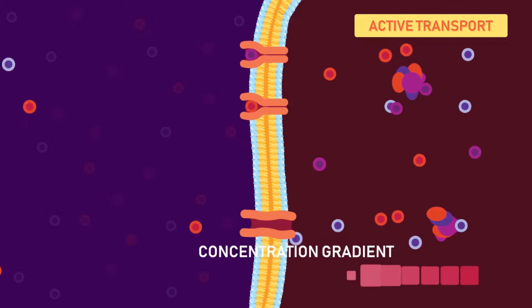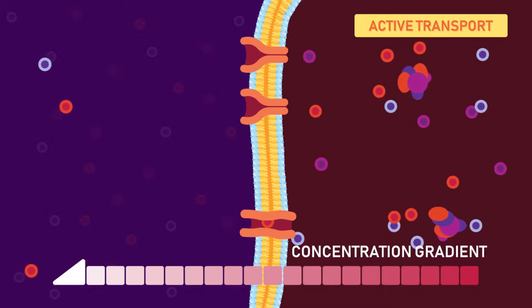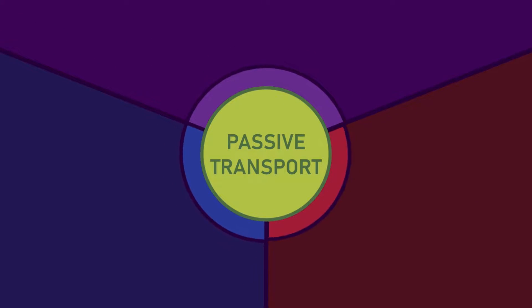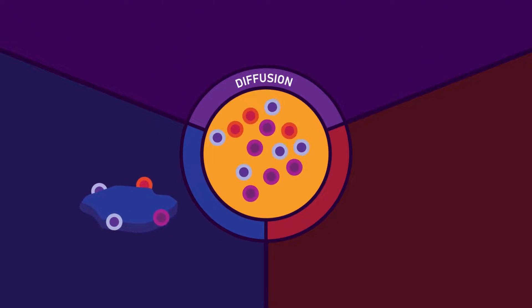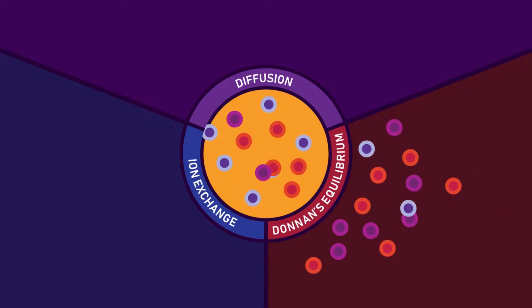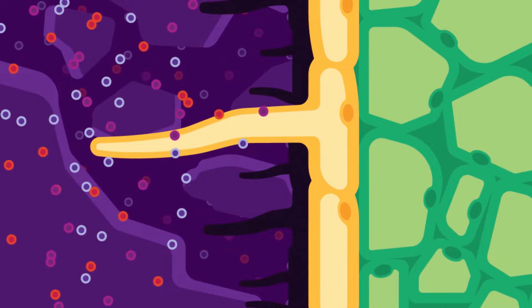The passive process transport or absorption can be explained by diffusion theory, the ion exchange theory, and Donan's equilibrium. Diffusion theory: when the concentration of mineral ions is higher in the external soil solution than the root, then the ions in the soil solution will move from a region of higher concentration.